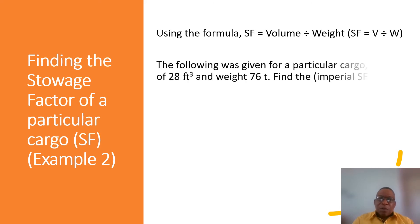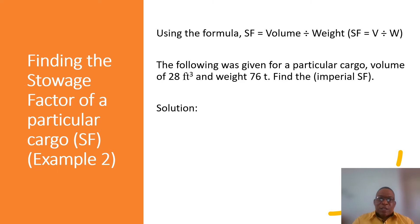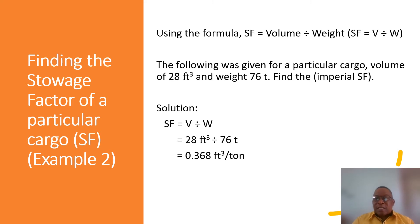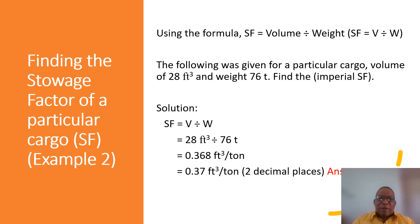Now let's look at another example where the weight is greater than the volume. The volume given is 28 cubic feet and the weight is 76 tons. This results in a heavier commodity because it occupies less space and should result in a smaller storage factor. The solution: 28 cubic feet divided by 76 tons gives us 0.368, which rounds to 0.37 cubic feet per ton.